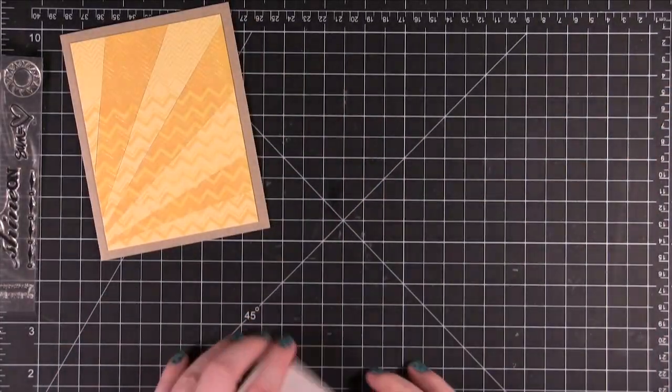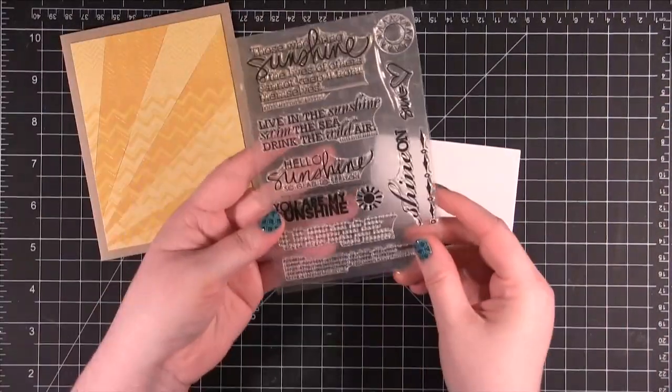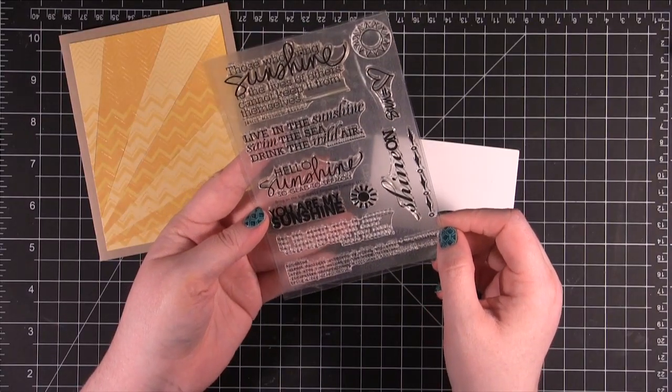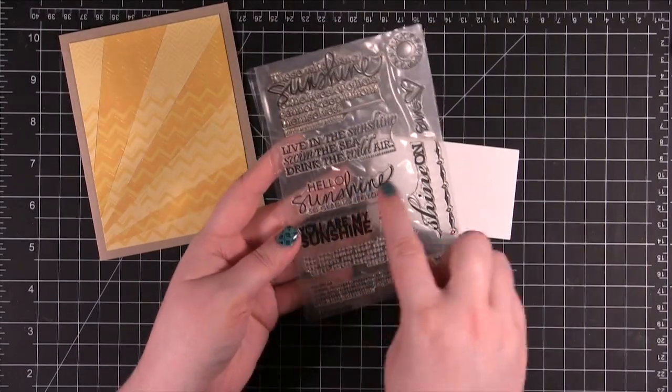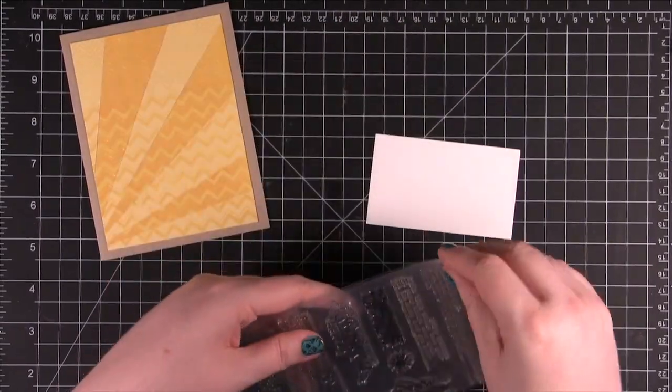I have some white Nina cardstock that I'm going to use this stamp set on. This is the Bring on the Sun stamp set from Ally Edwards and Technique Tuesday. I'm going to use this one right here. This is Hello Sunshine. So glad to see you.